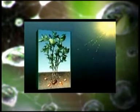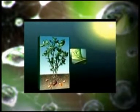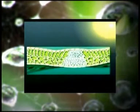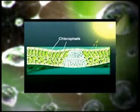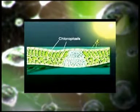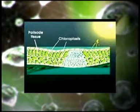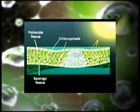Proses ini dimulai ketika sinar matahari mengenai chloroplast pada daun. Chloroplast adalah organ kecil berwarna hijau yang ada pada sel tumbuhan, yang ada pada jaringan palisade dan jaringan spongi. Energi matahari diserap oleh chlorophyll yang adalah pigmen hijau pada chloroplast.